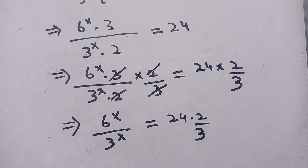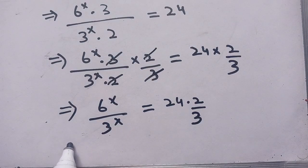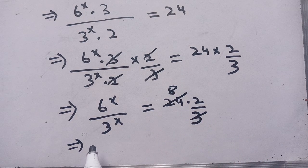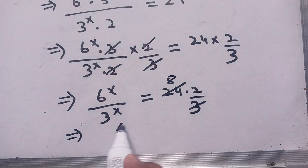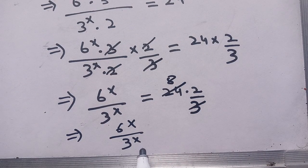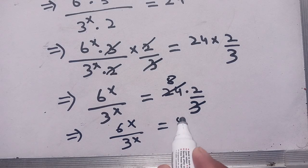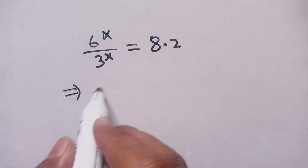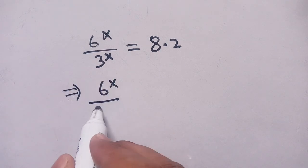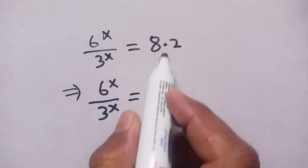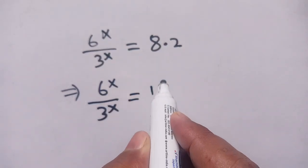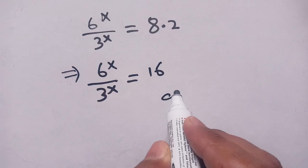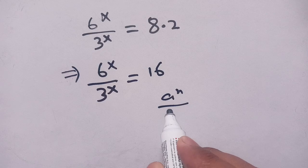We can write 24 × 2/3 as 3 × 8 × 2/3, which simplifies to 8 × 2 = 16. So 6^x divided by 3^x is equal to 16.